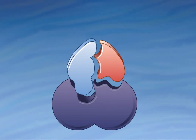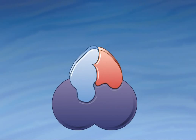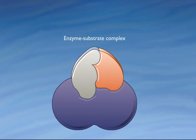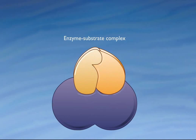The enzyme and substrates form an enzyme-substrate complex. The interactions between the substrates and the enzyme stresses or weakens some of the chemical bonds in the substrates. These stresses encourage a link between the two substrates, leading to the formation of a different molecule.